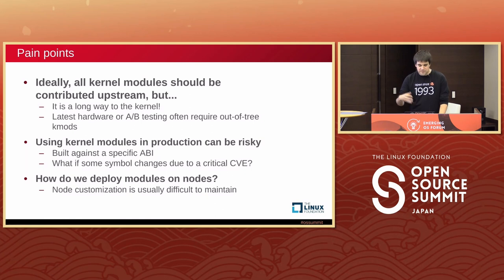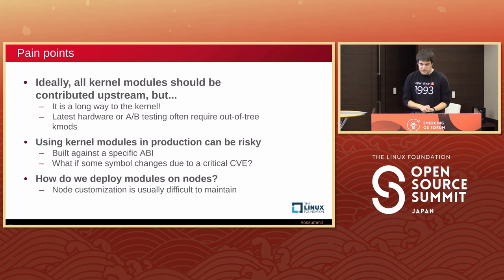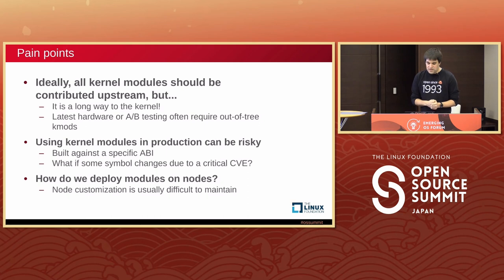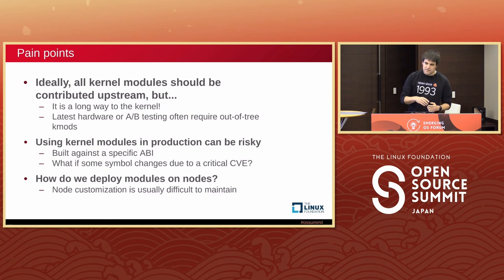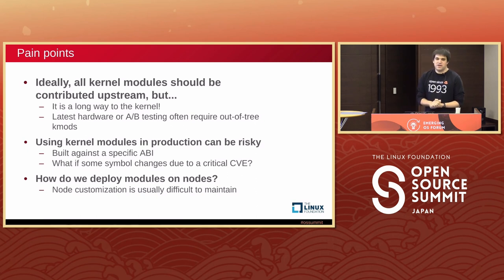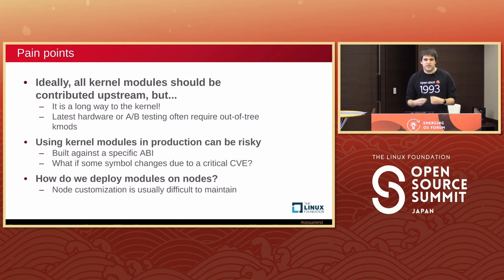Another issue with kernel modules is that they're built against a very specific kernel version. If any symbol in the kernel changes — if the ABI changes — we have to rebuild the entire kernel modules, and even with a guaranteed stable kernel we may hit a CVE that forces an ABI change. Additionally, kernel modules not part of your distribution are difficult to deploy on nodes and keep up to date with running kernels — that usually means you have to customize your nodes before they go into operation.